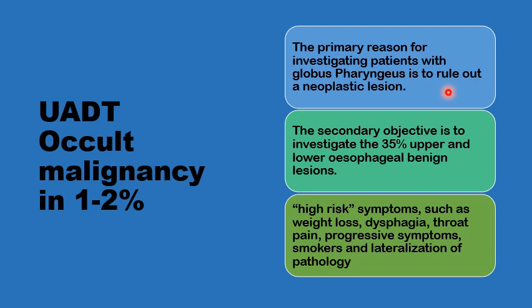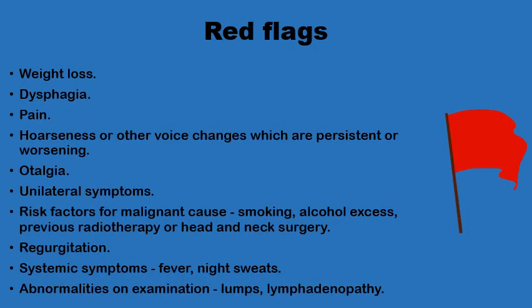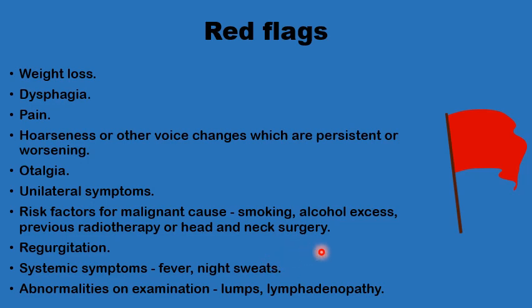The high-risk group needs to be examined thoroughly with any required investigations to rule out this possibility. When any globus patient describes red flags, they require further investigations including rigid endoscopy under anaesthesia. Red flags include weight loss, dysphagia, pain, dysphonia, otalgia, unilateral symptoms, risk factors for malignancy such as smoking or excess alcohol, regurgitation, fever, or night sweats. Any abnormality on flexible scope examination — such as ulcers, masses, lumps, or neck nodes — also warrants further investigation.